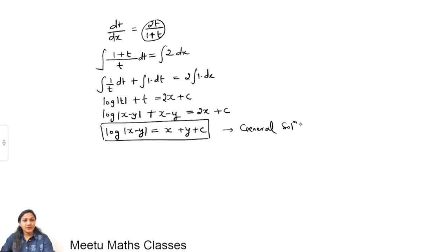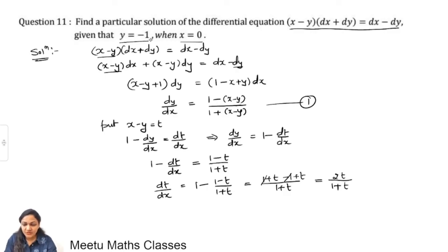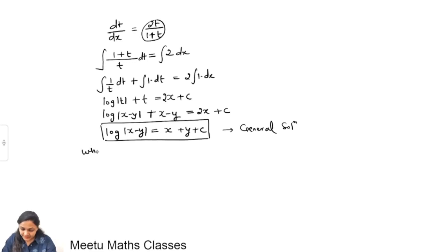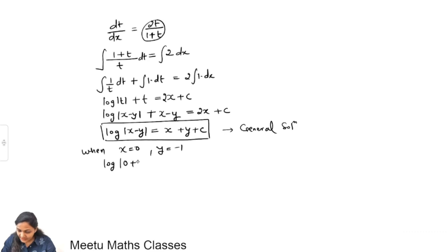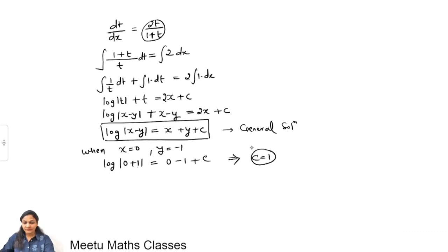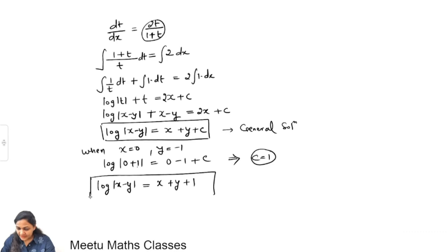Now finding the particular solution when x = 0 and y = −1: substituting into the general solution gives log|0 − (−1)| − 0 − (−1) = c, so log(1) + 1 = c, meaning c = 1. Substituting back, the particular solution for the given differential equation is obtained.